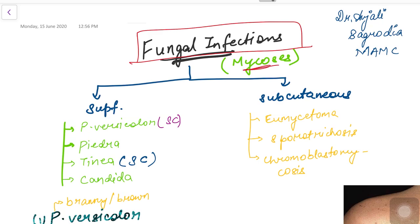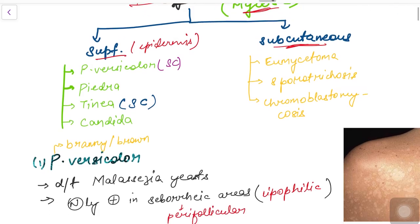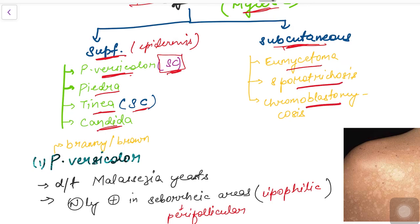Fungal infection is also known as mycosis. We divide these into two categories: superficial and subcutaneous. Superficial infections involve the epidermal layer, while subcutaneous fungal infections involve the subcutaneous layer. In the superficial group we have four infections: Pityriasis versicolor, Piedra, Tinea, and Candida. In the subcutaneous mycoses we have three entities: Eumycetoma, Sporotrichosis, and Chromoblastomycosis.